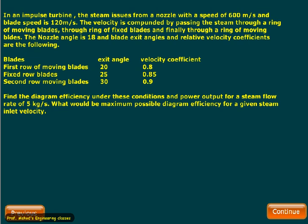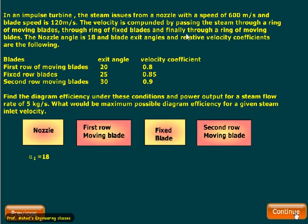If mass flow rate is 5 kg per second, what we are given is that it is passing through the ring of moving blades. So before moving blades we must have a ring of nozzle, then first row of moving blade, then we have fixed blade, and then we have second row of moving blade. The fixed blade basically acts as a nozzle and finally through a ring of moving blade, so we have second row of moving blade.